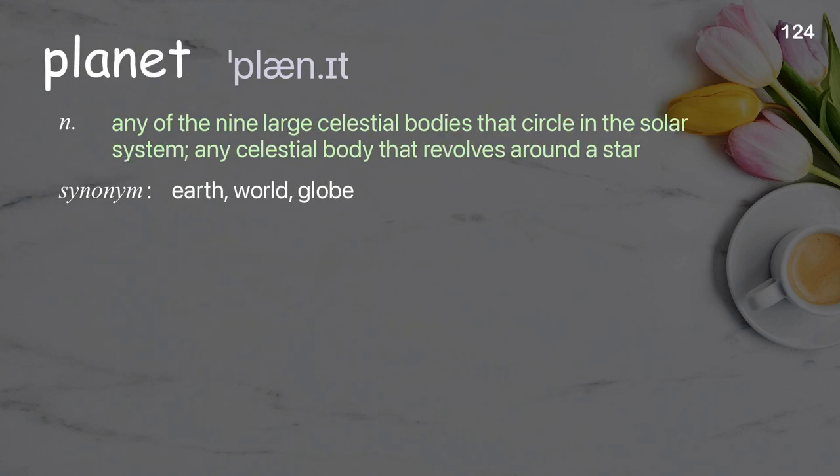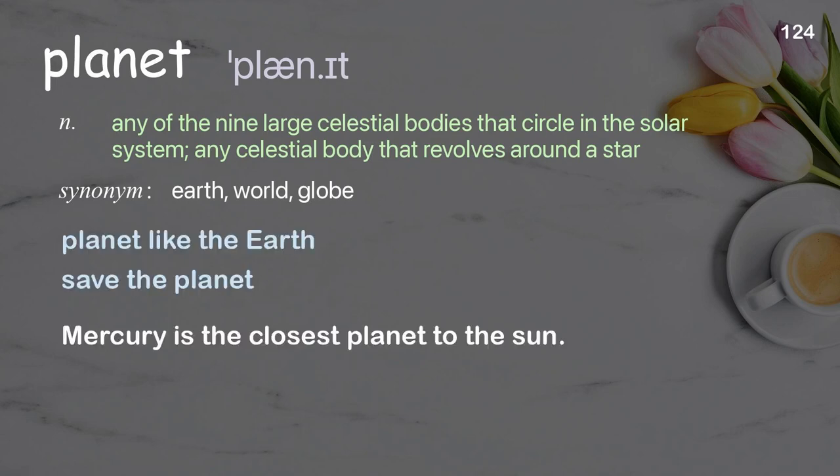Planet. Any of the nine large celestial bodies that circle in the solar system; any celestial body that revolves around a star. Examples: planet like the earth. Mercury is the closest planet to the sun.